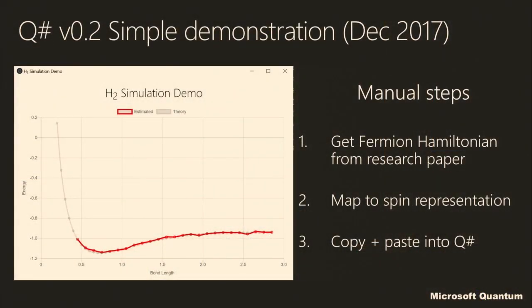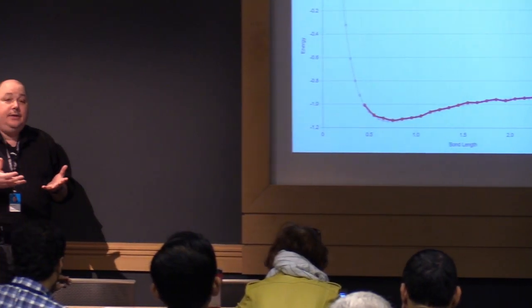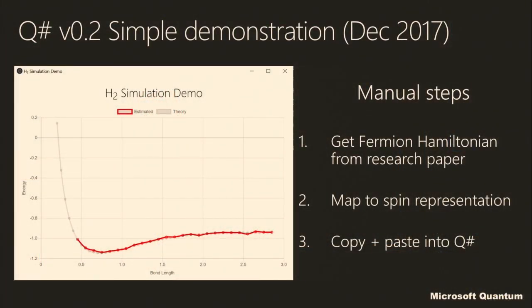Here's an example of something you might want to see come out of one of these simulations. Theory has a predicted curve relating the bond length in a hydrogen molecule with the associated energy. We'd like to simulate around the low point because that's where we find the system at equilibrium. The methodology uses the same approach we've used for a long time: you get the theory out of a research paper, work it out in terms of the simulation you can do, and then cut and paste it into your simulator — be it MATLAB or now Q#. Out comes some plots, which hopefully match well with the theory. Very intensive and not scalable to large things.